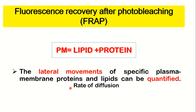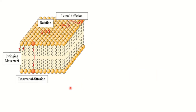First, let's understand the types of movement shown by lipids and proteins in the plasma membrane. For lipids, there are 4 types of movements in the plasma membrane, but proteins show only 2 types of movement. The first lipid movement is lateral diffusion, where lipids can be exchanged within a single monolayer. The second movement is rotation.